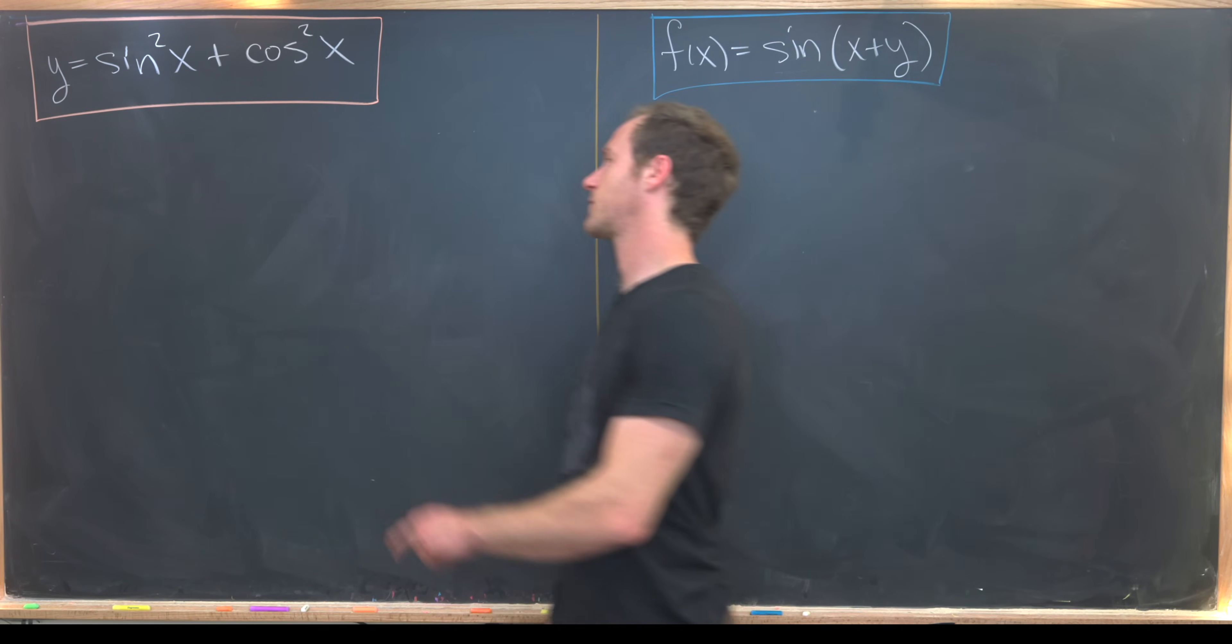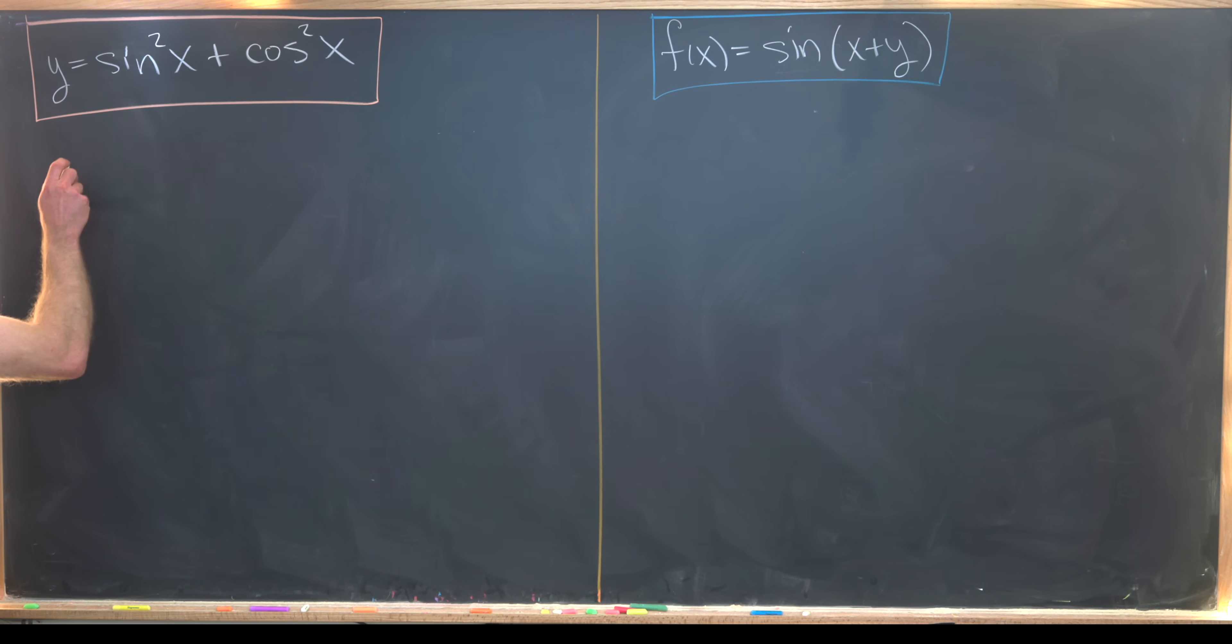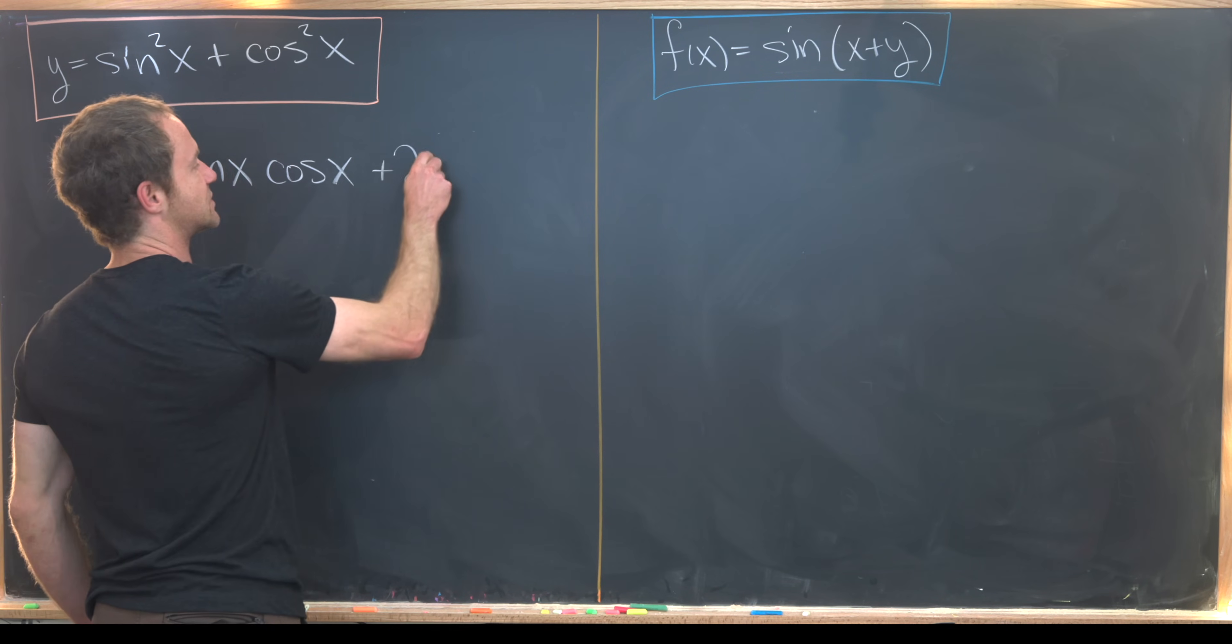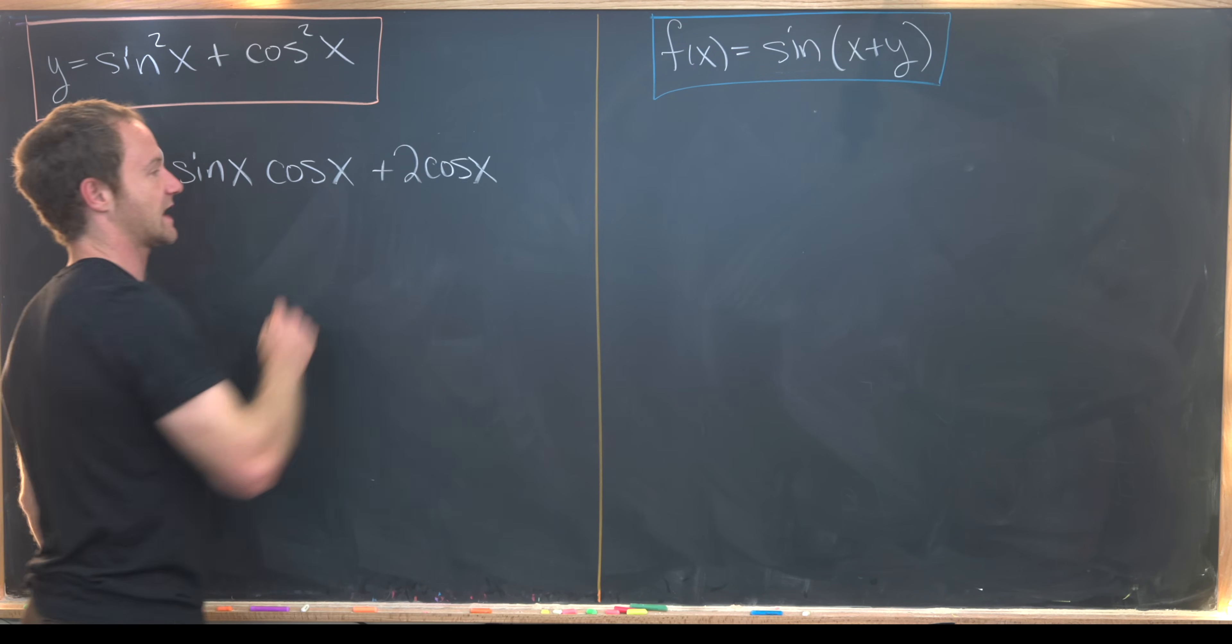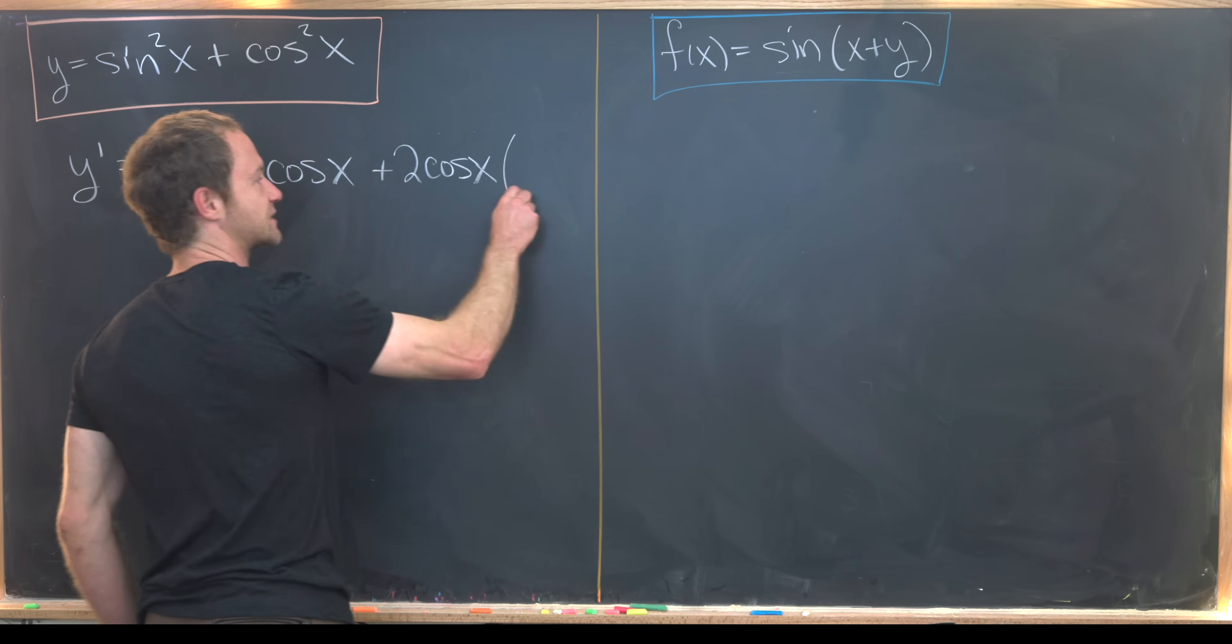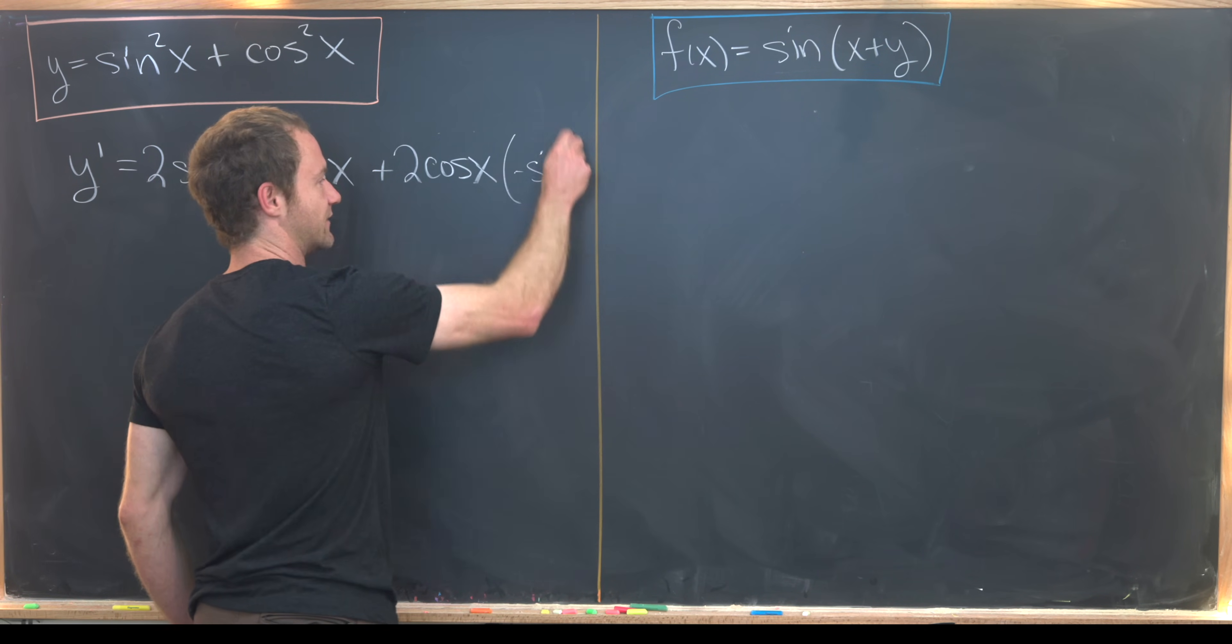Now I want to take the derivative of y with respect to x, so that'll be y'. I need to use the chain rule for this sin²(x) term and the cos²(x) term. We'll get 2 sin(x) times the derivative of sin(x), which is cos(x), and then plus 2 cos(x) times the derivative of cos(x), which is -sin(x).